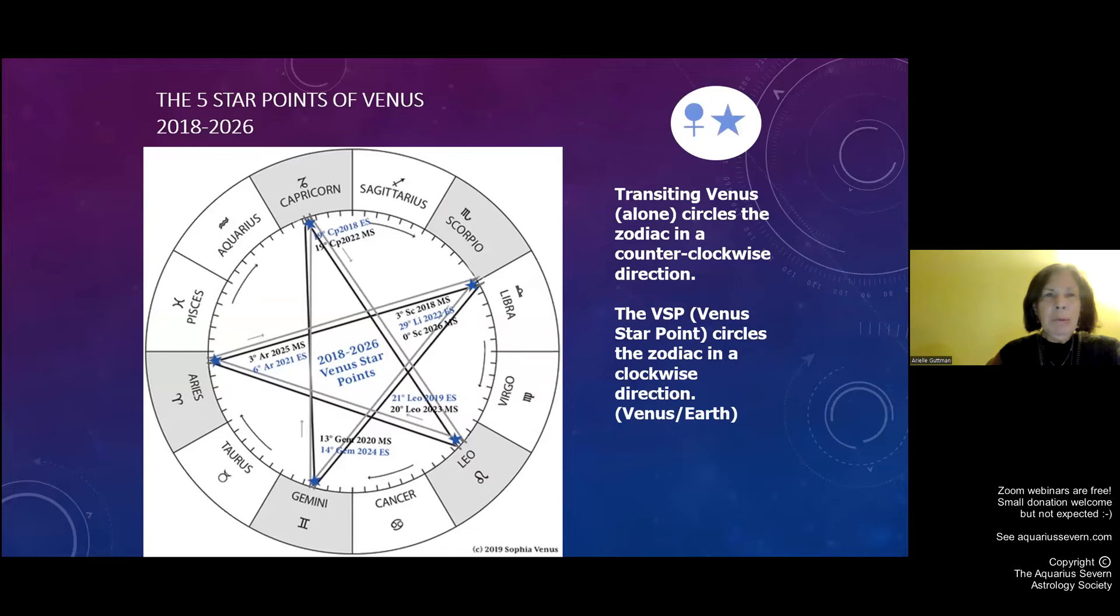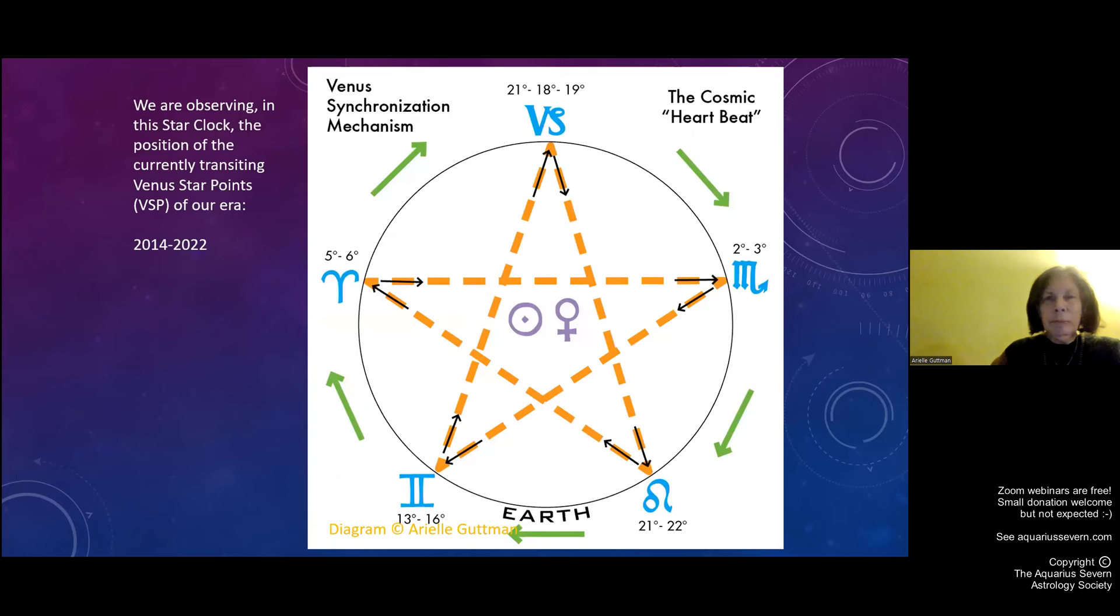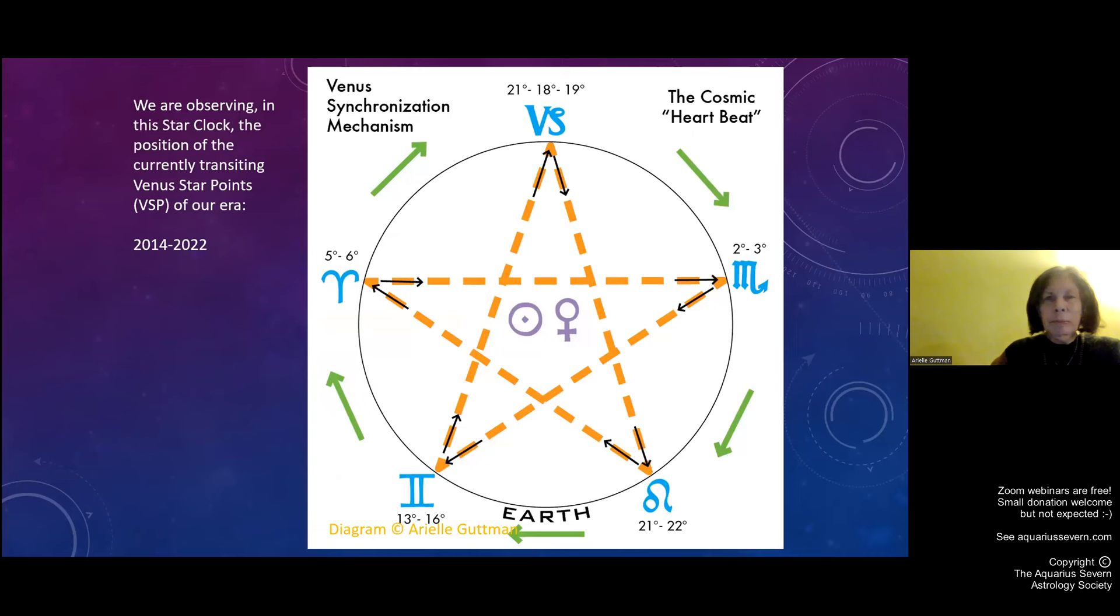And those are the two books of mine that have a lot of material about the Venus star in them. There is a certification course I offer about the Venus star if you want to get really involved with it. As I said before, how do you locate your Venus star point? You look at the conjunction of Venus and the sun prior to your birth. You can look in the book at the table. You can go to the website and download the PDF, or you can go to your ephemeris and just check it out. I mean, you can go to your software program, your astrology software, and calculate it from there.